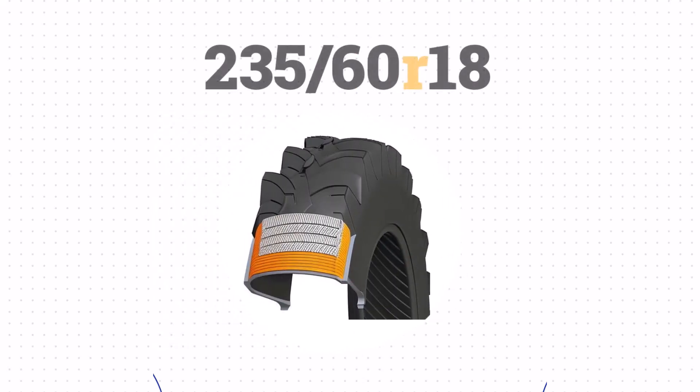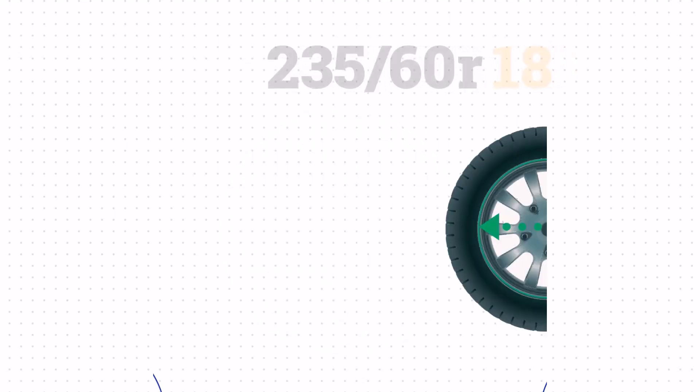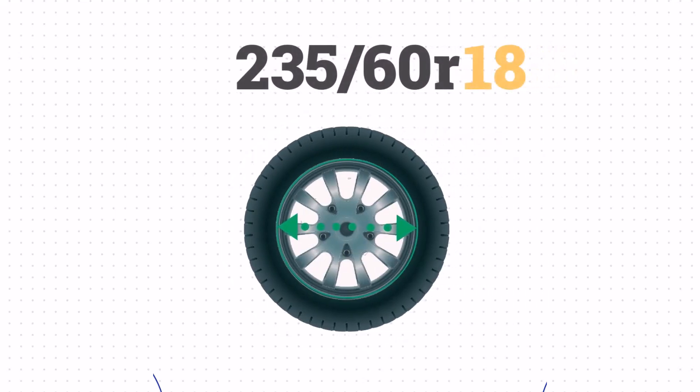The R stands for radial construction, indicating the tire is built with radial ply. Finally, the last number 18 refers to the wheel size, which is 457.2mm or 18 inches.